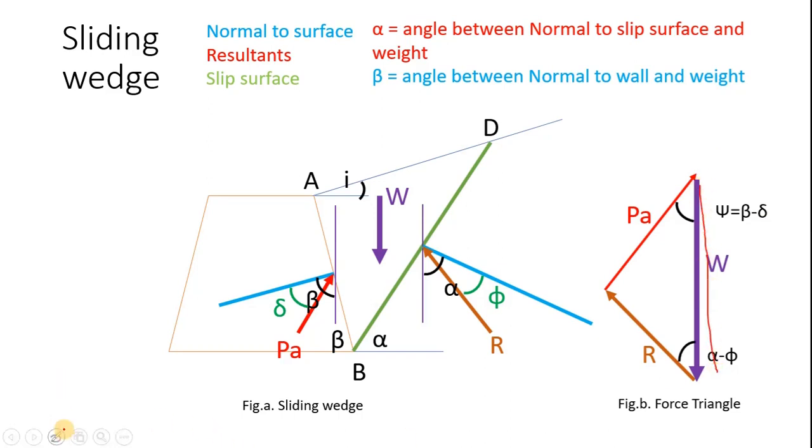Now let's find the angle between these forces. We need the angle between weight and R. We know this is phi and this is alpha. Then angle between these two will be alpha minus phi. Similarly, angle between PA and W would be beta minus delta, which is this angle between PA and weight.